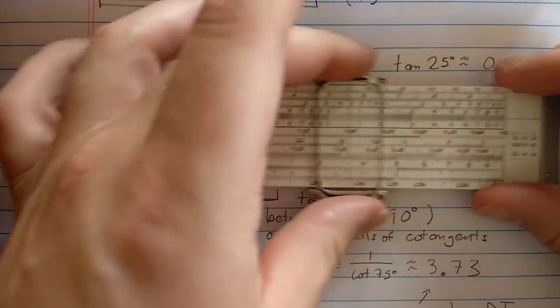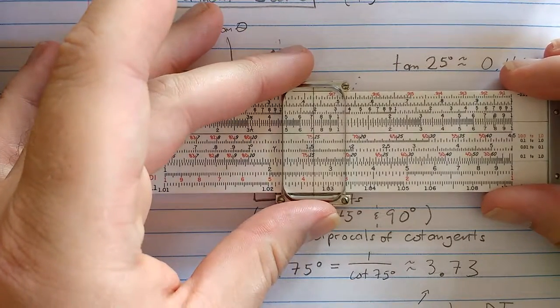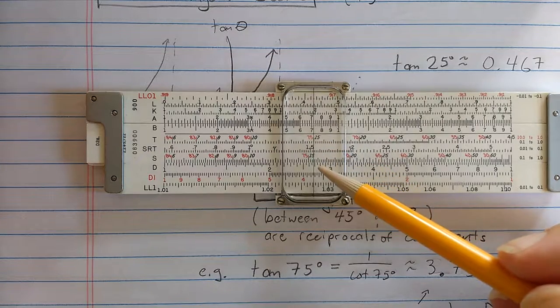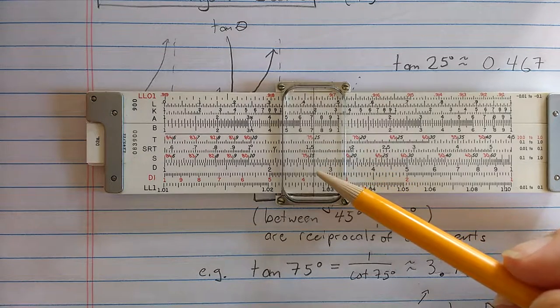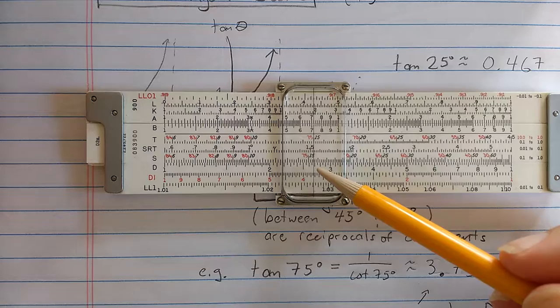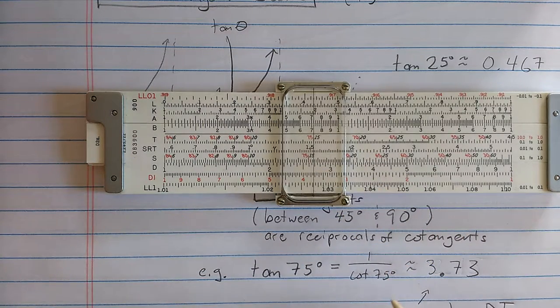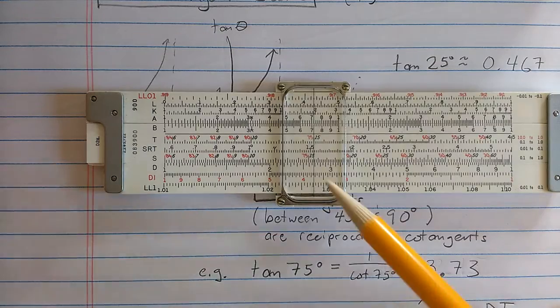The cotangents are the tangents of the complements, and they're marked in red on the T scale. So I find 75 in red on the T scale there. And then what's reading on the T scale is the cotangent of 75 degrees, but on this slide rule, what's reading on the DI scale is the tangent of 75 degrees.